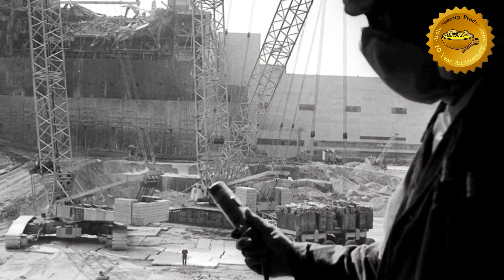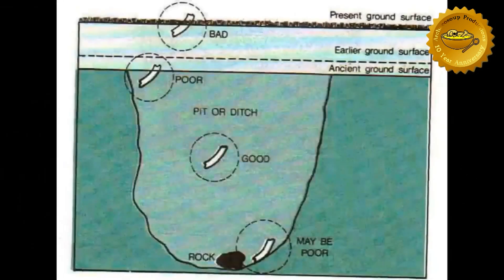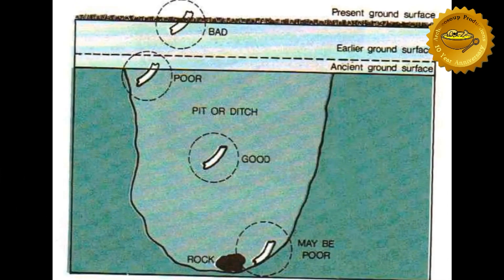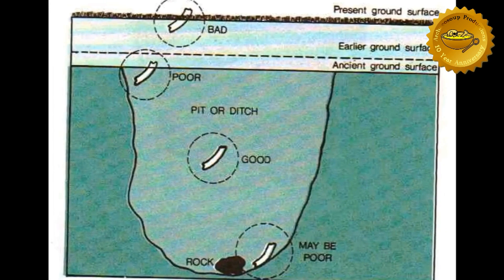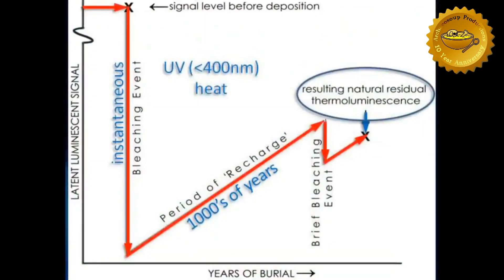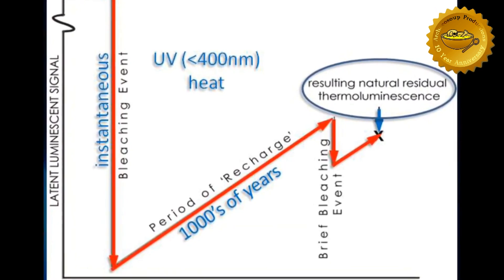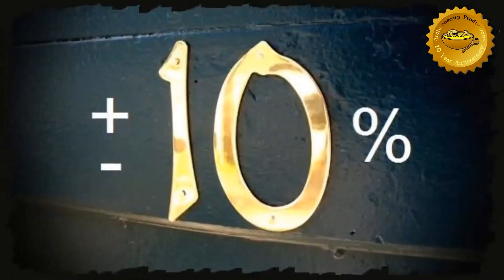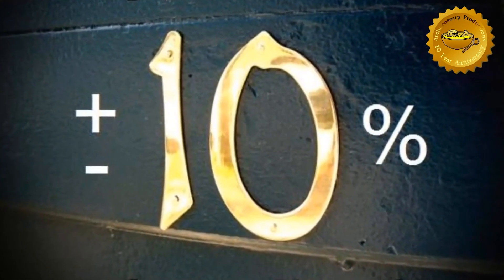It's also better if an object is found within a uniform environment — i.e. in the centre of a context where the dose will be more stable than on the edge of the context. You must also be aware of how frequently the object may have been bleached. A pot, for example, may be bleached when it's used for cooking. And also, thermoluminescent dates often have a margin of error of up to 10%.